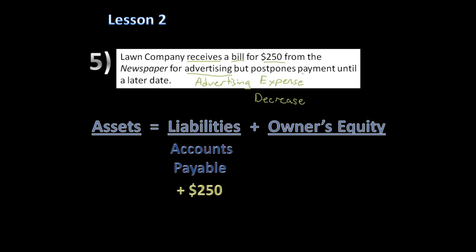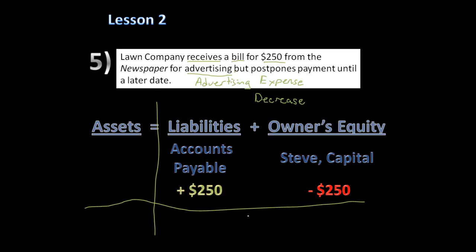Advertising expense falls under owner's equity and decreases it. Our owner's equity account is Steve Capital, so we decrease Steve Capital by $250. Breaking into left and right: assets have zero change on the left. On the right, liabilities increase by $250 and owner's equity decreases by $250, netting to zero. Both sides are still equal, so our transaction is balanced.